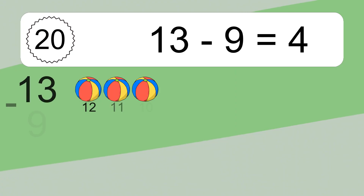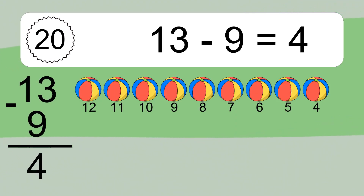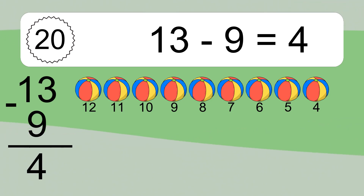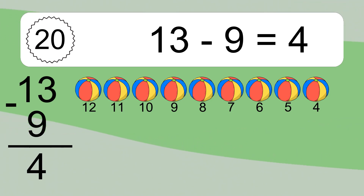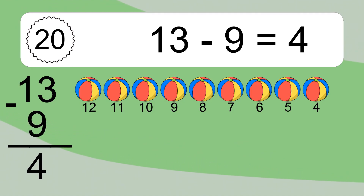13 minus 9 equals what? 13 minus 9 equals 4. Let's count it: 12, 11, 10, 9, 8, 7, 6, 5, 4.